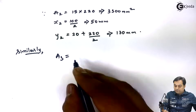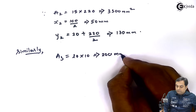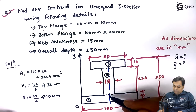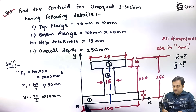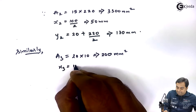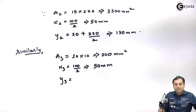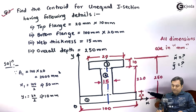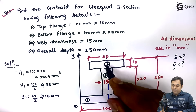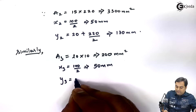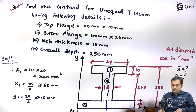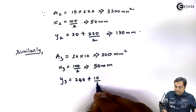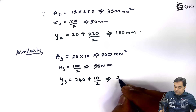For rectangle three (the top flange): Area 3 = 20 × 10 = 200 mm². x3 is again at half of 100 = 50 mm, as the y-axis location is the same for all three rectangles. y3 = 240 + (10/2) = 240 + 5 = 245 mm, since the third rectangle starts after 20 + 220 = 240 mm.